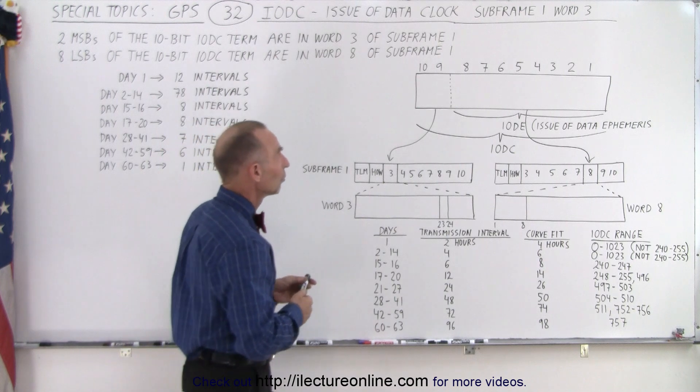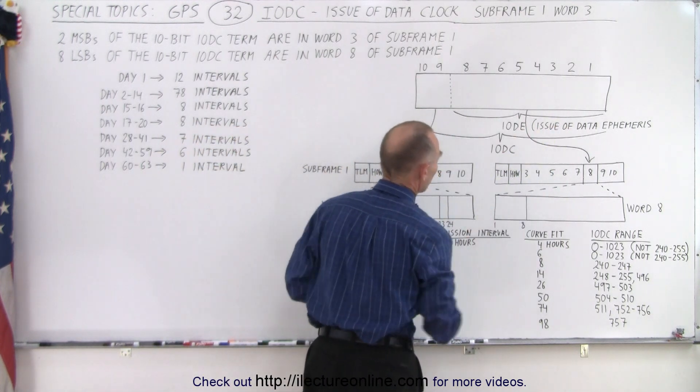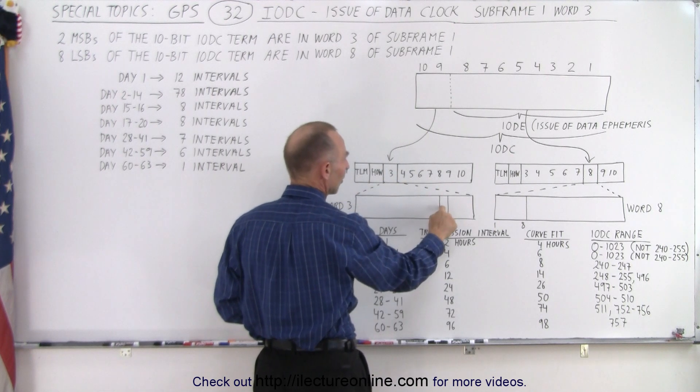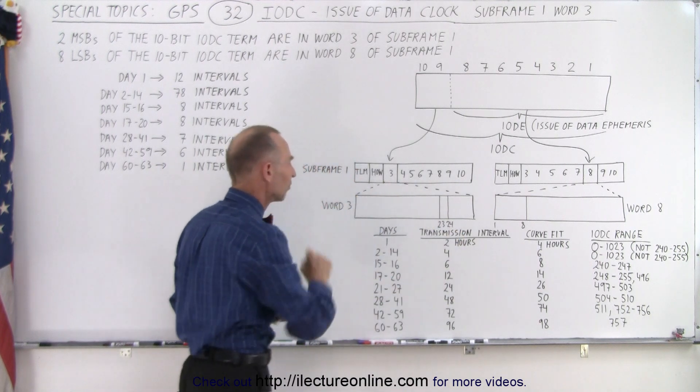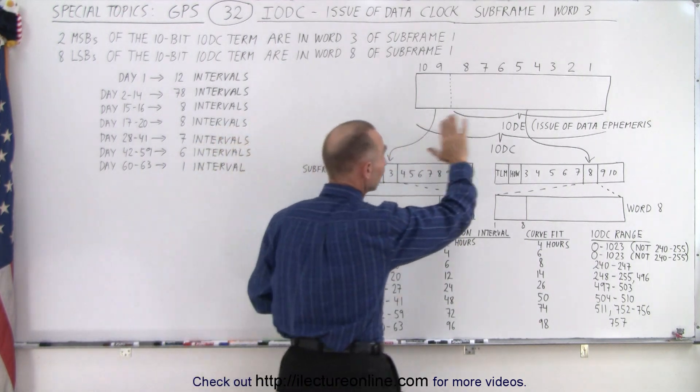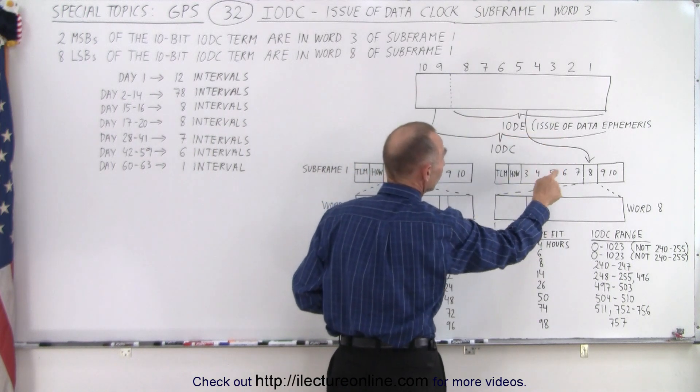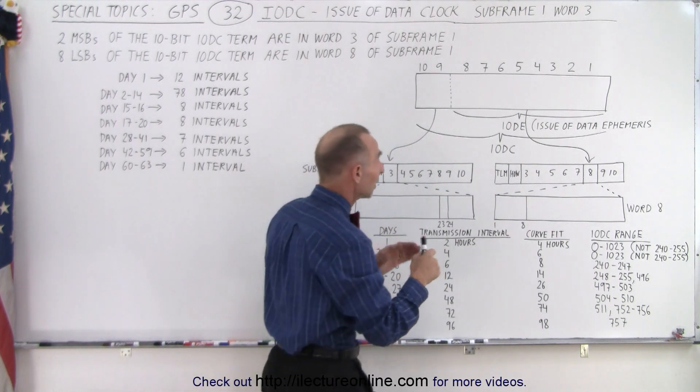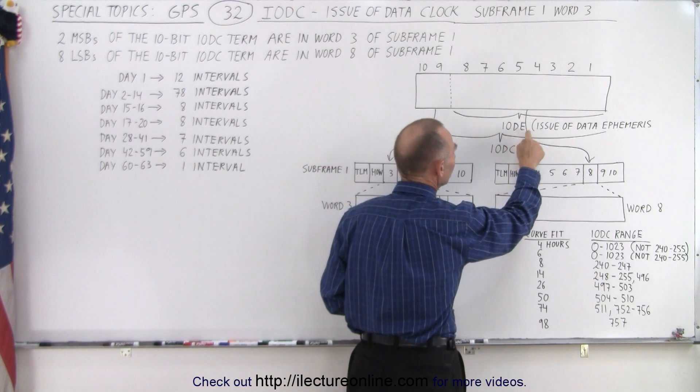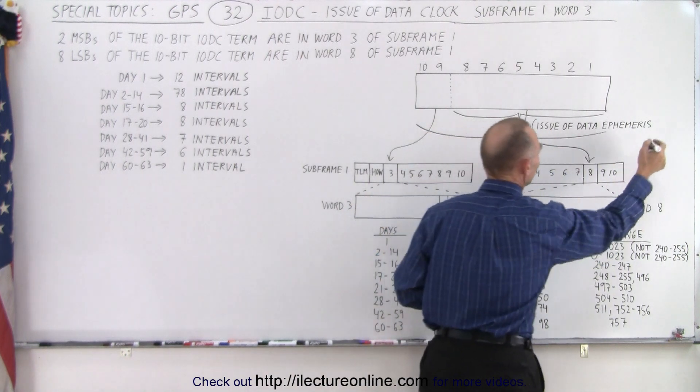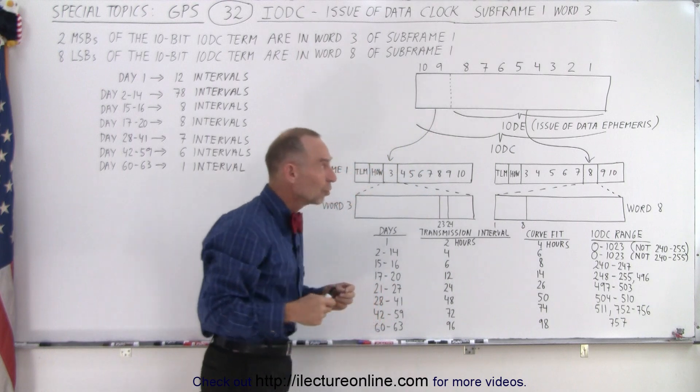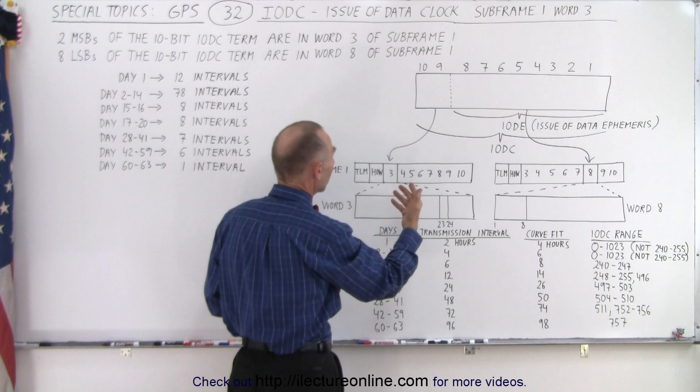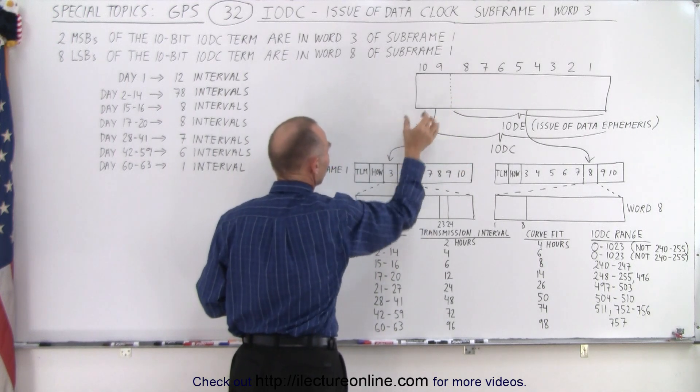So let me explain. So we have a 10-bit piece of instruction. The first two bits, the most significant bits, are contained within word 3. And notice they're bit 23 and 24 of word 3 in subframe 1. The next 8 bits, the least significant bits, they're contained in word 8. And they are the first 8 bits of that word. Now it turns out that those 8 bits also account for the IODE, which is the Issue of Data Ephemeris. And so that gives you some information about the Ephemeris, but the Issue of Data Clock, that is the additional 2 bits that you'll find in word 3.